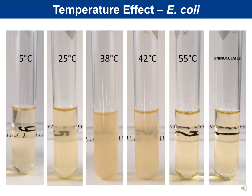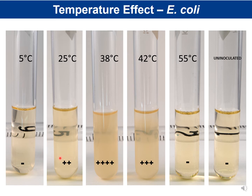For E. coli, comparing against the uninoculated control: 55°C shows no growth, 5°C shows no growth. The highest growth is at about 38°C (human body temperature), with quite a bit of growth also at 42°C and at 25°C. So 38°C gets 4+, 42°C a little less, 25°C the least. This makes sense because E. coli's normal habitat is the human gut.